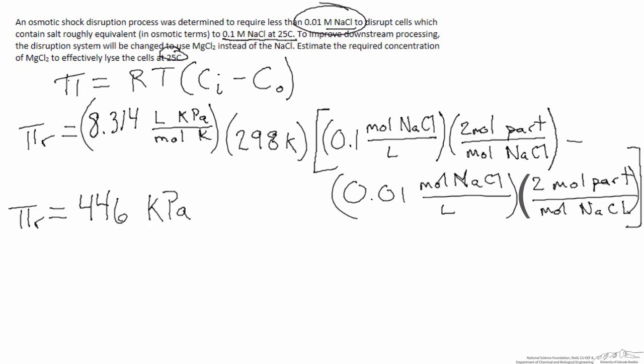Quickly calculating through, we find the osmotic pressure required is 446 kPa. Checking our units: moles cancel with moles, liters cancel with liters, and Kelvin cancels with Kelvin, leaving us with units of kilopascals — a pressure, as expected.